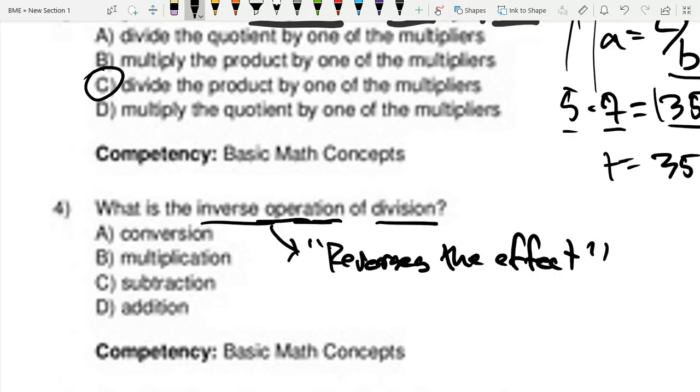So in this case, we're asking what operation reverses the effect of division? Well, that's multiplication, right? Because if we did 35 divided by 7 equals 5, if we wanted to make it back to 35, we would just multiply by 5 on both sides. And it's multiplication.